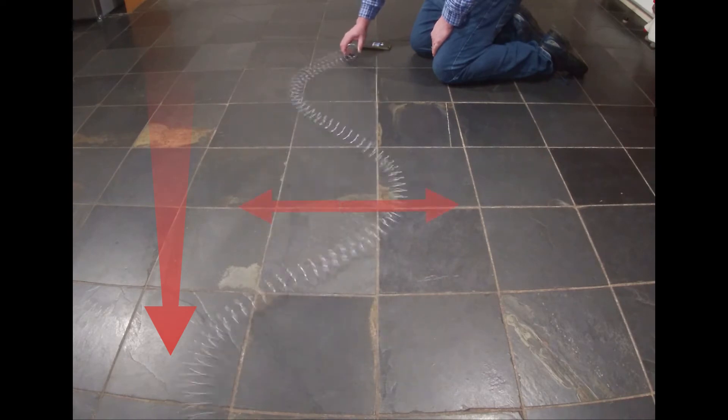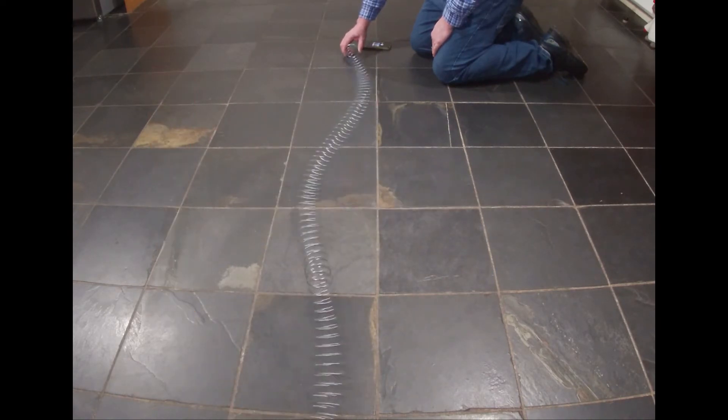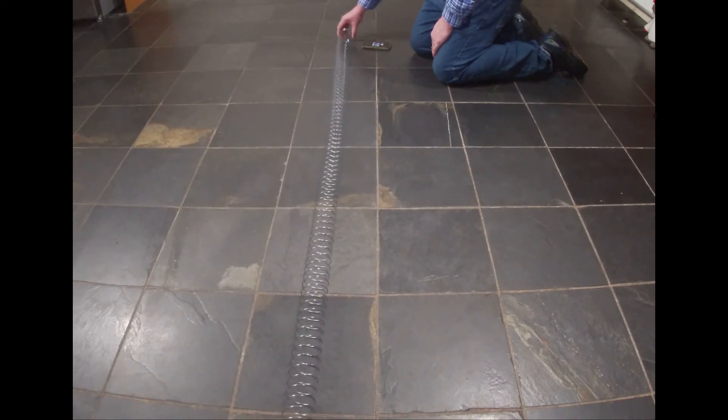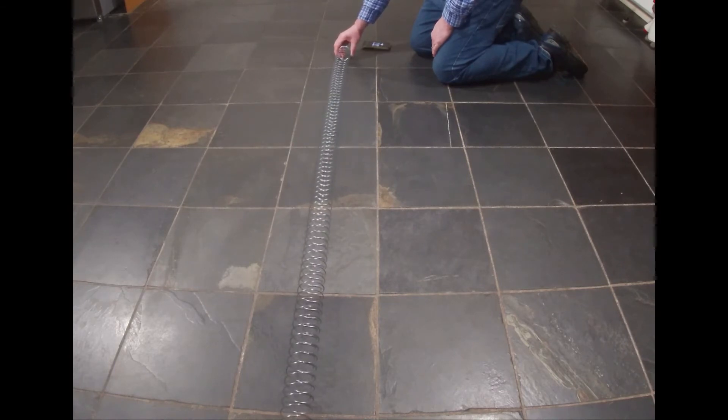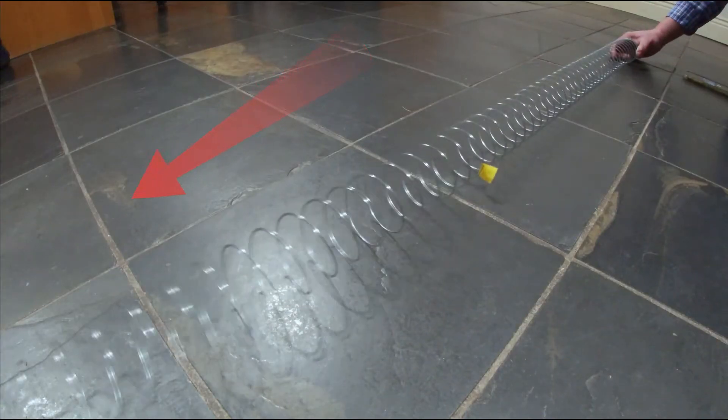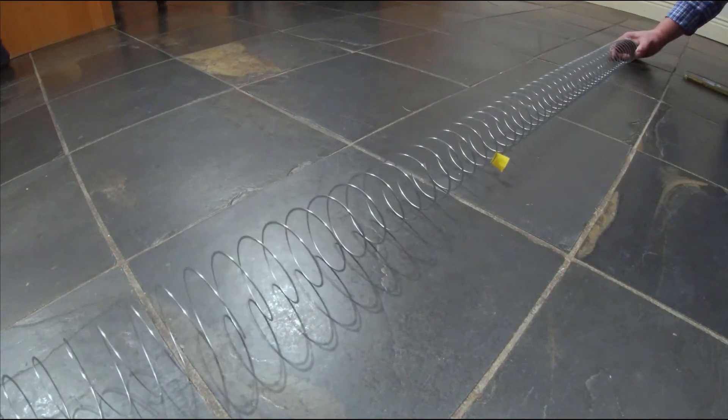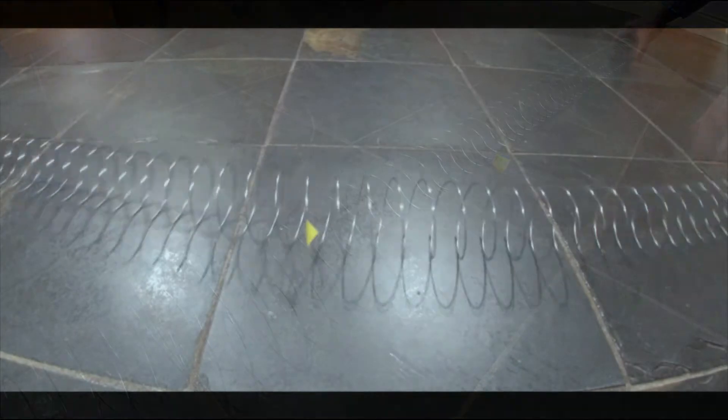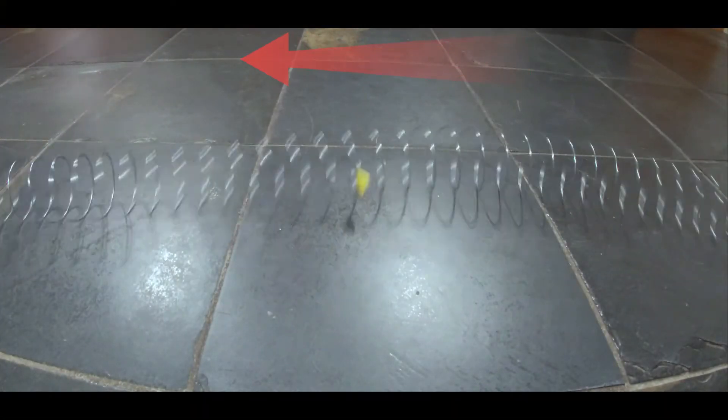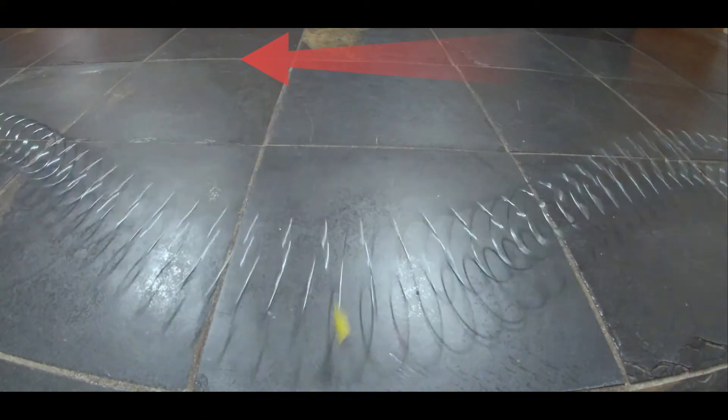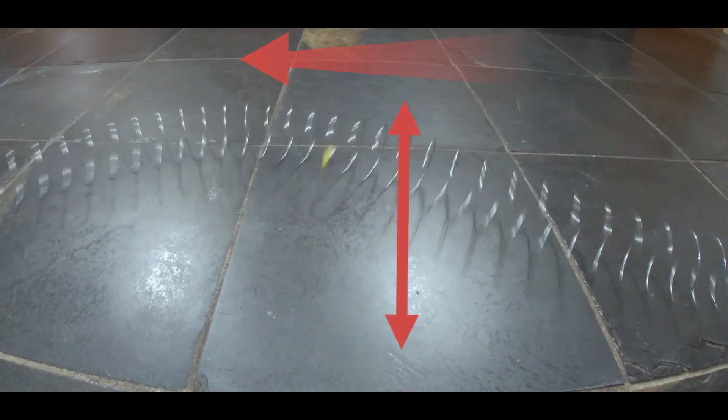With the transverse wave, the particles are moving at 90 degrees to the direction in which the wave is moving. Here's another view of the longitudinal wave with a piece of yellow tape showing clearly the motion back and forth in the direction the wave is traveling. And here's the transverse wave with the movement at 90 degrees to the direction the wave is moving.